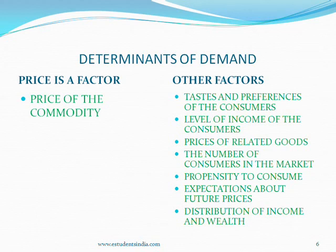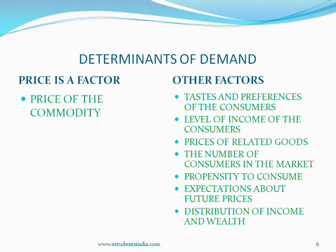Sixth, consumers' expectations with regard to future prices: if consumers expect that in the near future prices of goods would rise, then they would demand greater quantities presently, and the present demand for goods will increase. Seventh, income distribution: the propensity to consume of rich people is less than that of poor people. If distribution of income is more equal, the propensity to consume of the society will be relatively high, meaning greater demand for goods. If distribution of income is more unequal, the propensity to consume will be relatively less, and demand for consumer goods will be comparatively less.